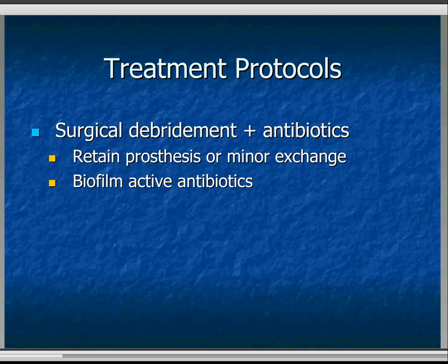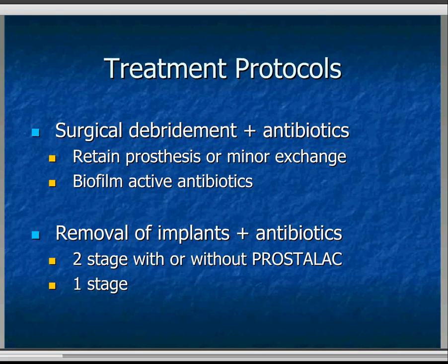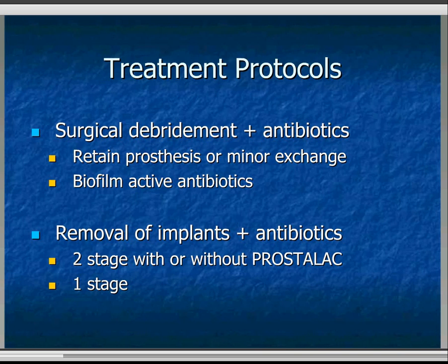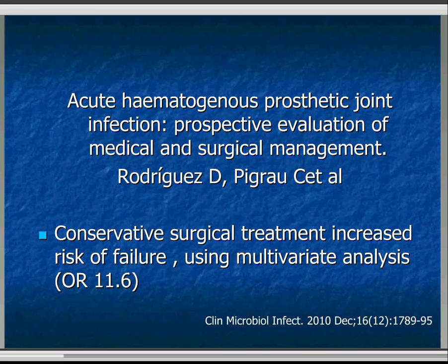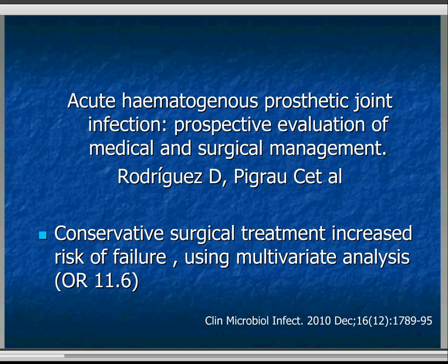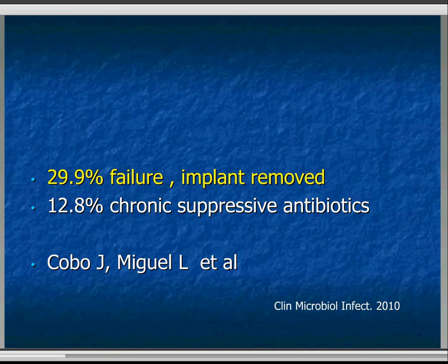The aim of treatment of deep infection is to eradicate infection first of all, but then to restore function. We're all familiar with the treatment protocols: retention of the implant by one or more debridements with antibiotics, or performing minor exchanges to allow more adequate debridement. You need to use biofilm-active antibiotics, guided by microbiology and infectious diseases specialists — generally rifampicin or fluoroquinolones, which have better penetration into biofilm. Then the more common two-stage re-implantation — removal of implants, antibiotic source with implants out, then re-implantation — or less commonly a one-stage exchange.